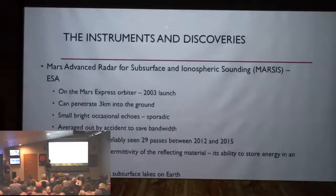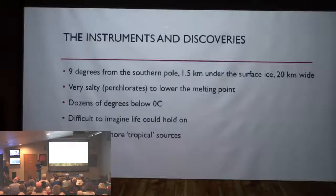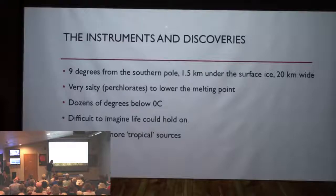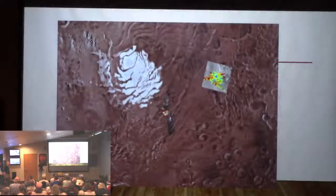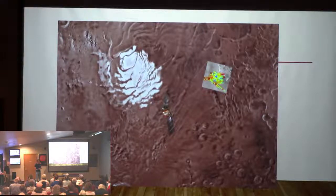So it's not a done deal that this is a subsurface liquid lake, but if it is, it's nine degrees off of the southern pole, about one and a half kilometers down below the surface of the ice, and about 20 kilometers wide. It's thought to be very salty, and this could be filled with the perchlorates that we talked about two months ago that are great disinfectant, or a good thing for killing life. So this lake would be at dozens of degrees below zero, below freezing Celsius. So it's difficult to imagine that this could be a place we could go find life. And so the search is on to find maybe more tropical or equatorial regions where the temperatures would get above these brutally cold levels. But here's a picture of the South Pole, and there's the scan data showing the location of this subsurface lake, maybe.